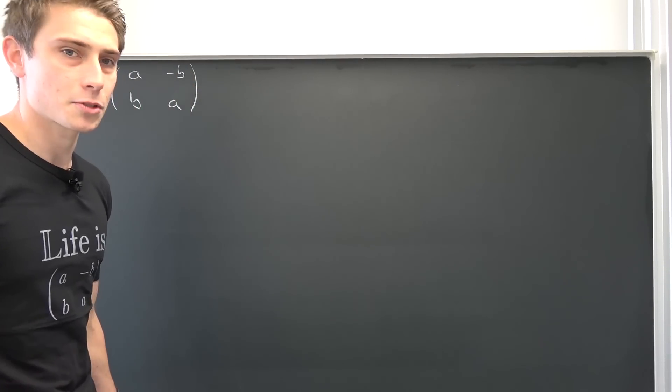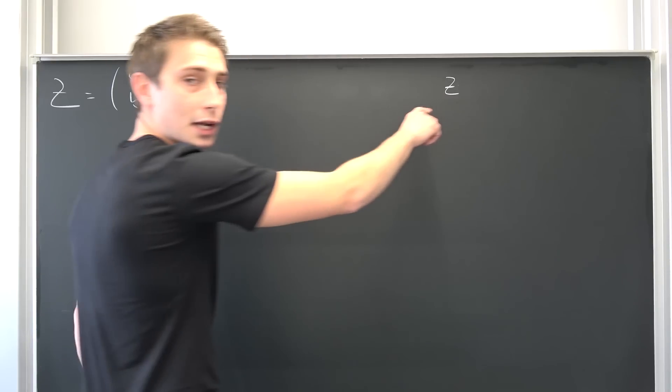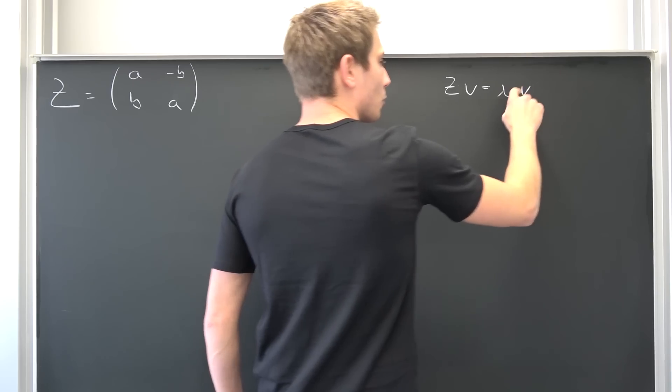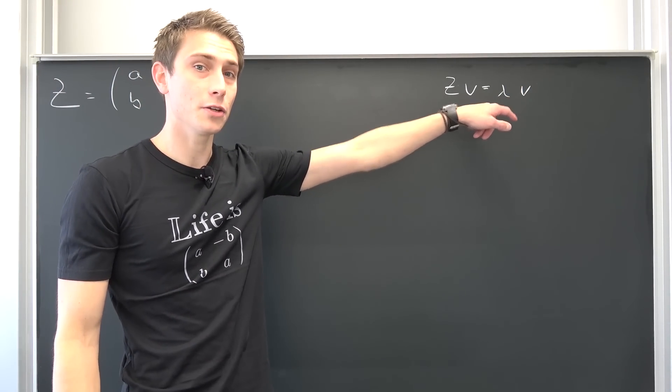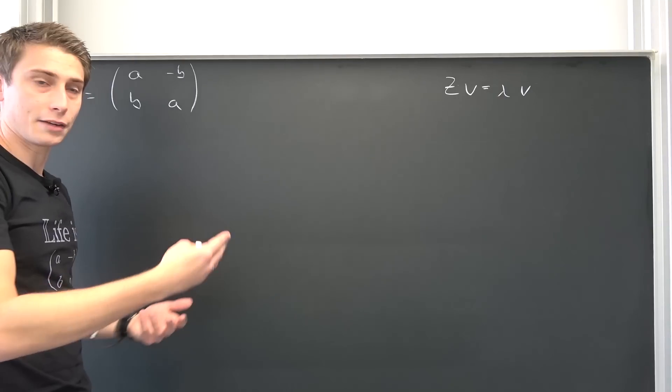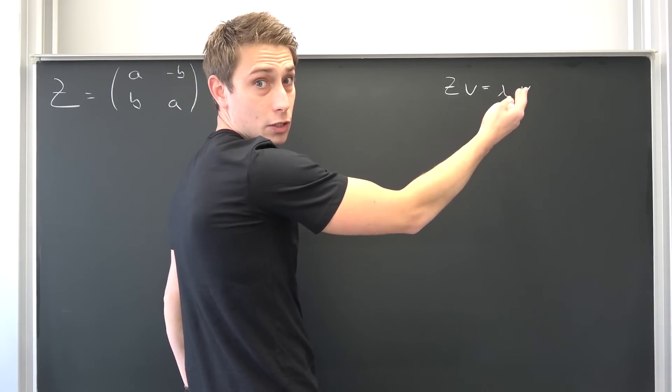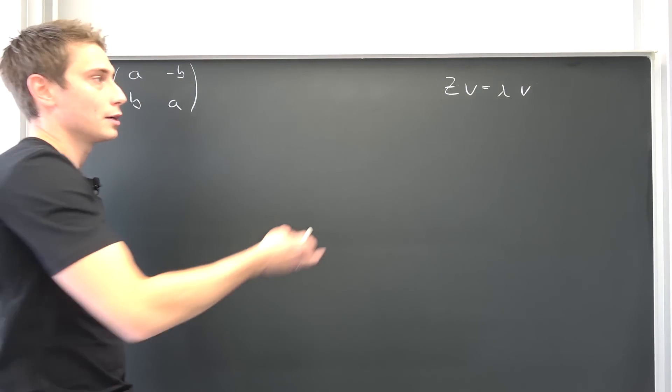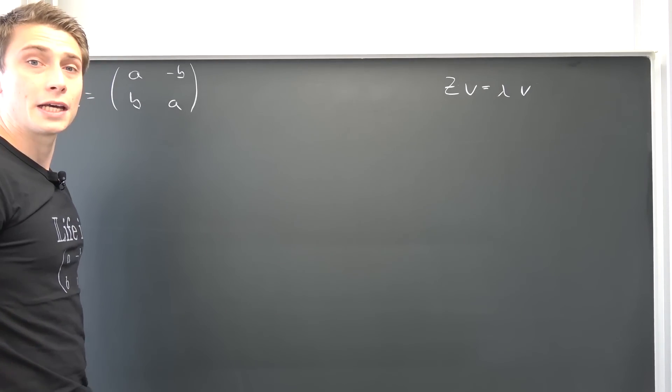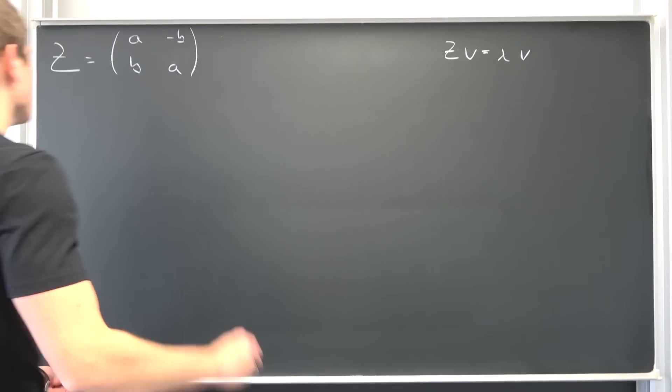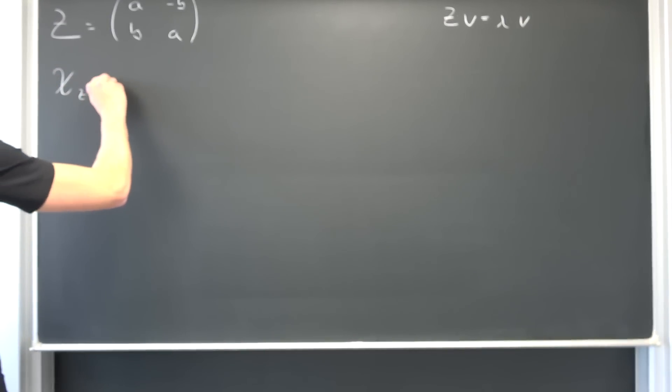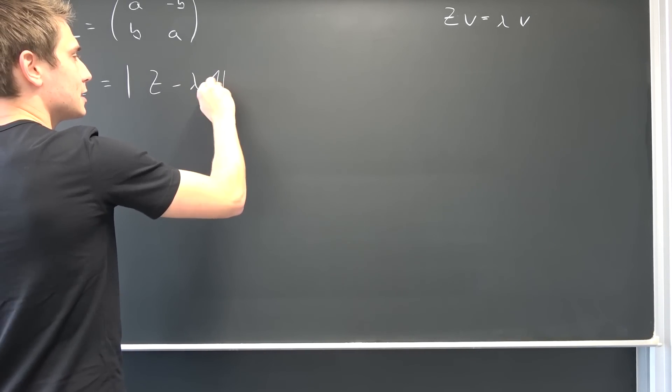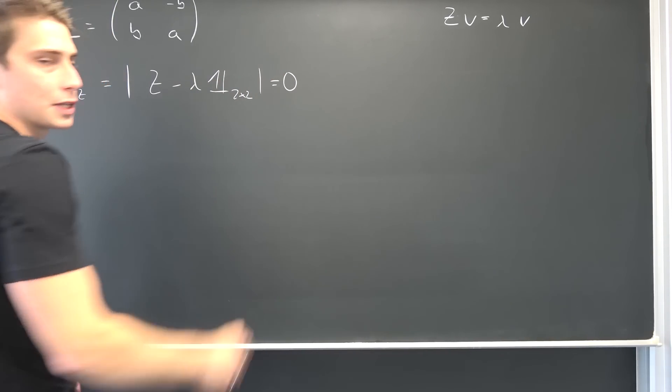I have done it several times on this channel before. What we want to have is if we multiply our complex number set by a vector, we want to find scaling vectors. Those eigenvalues are the values of our eigenvalue problem, of our linear transformation in this case, which only scale vectors and do not shift them or rotate them or whatsoever. That's our eigenvalue problem, and we are going to calculate ourselves the characteristic polynomial of z in this case. This is the determinant of z minus our eigenvalues times the identity matrix in two dimensions, and we want this to be equal to zero.